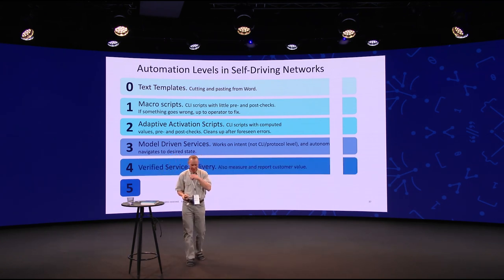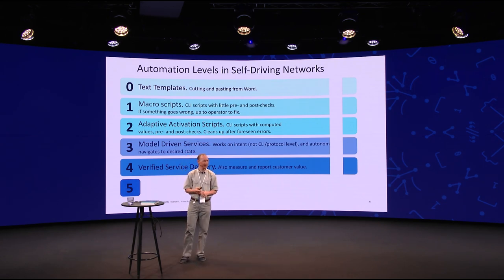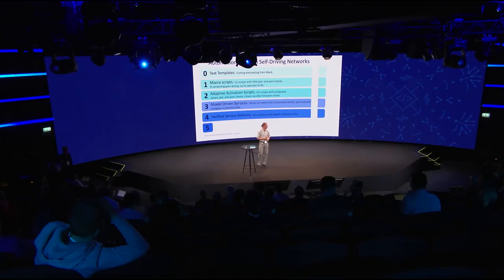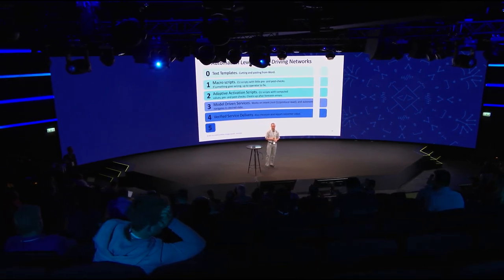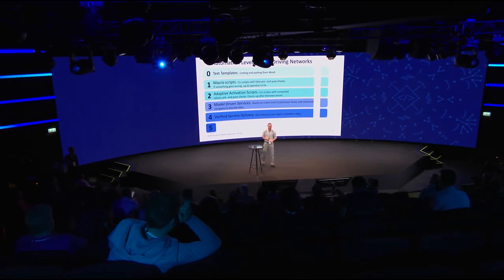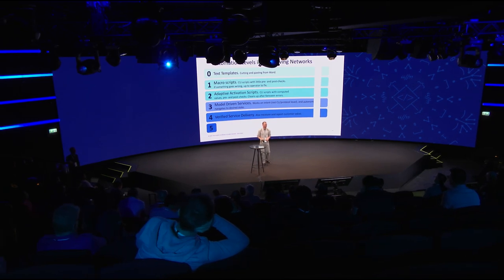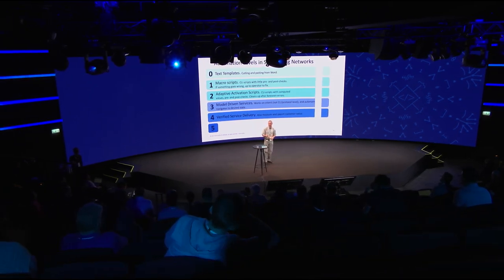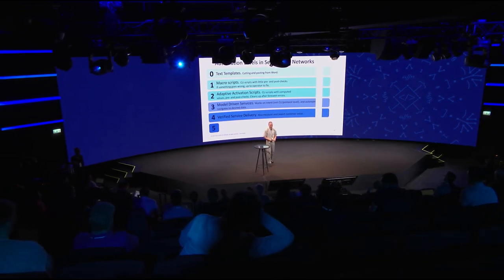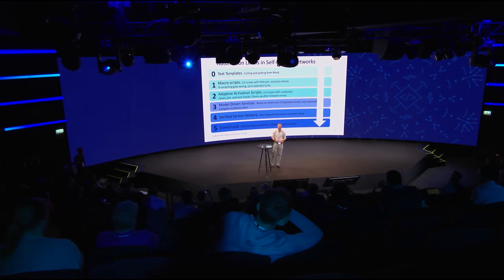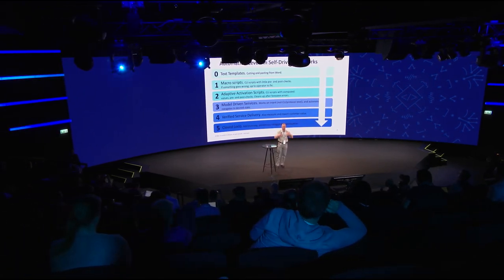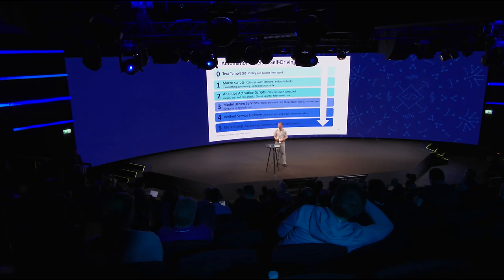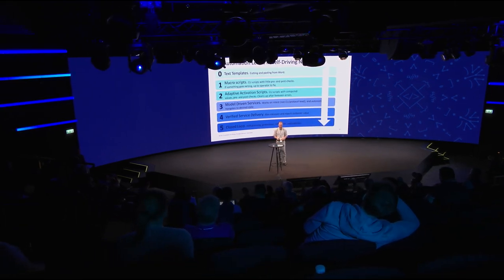Can somebody explain what verified service delivery is? Feedback loop — excellent. And what's level five? Closed loop — excellent. That's when you have to consider optimization, redeploying things after adapting to the context that changes over time.